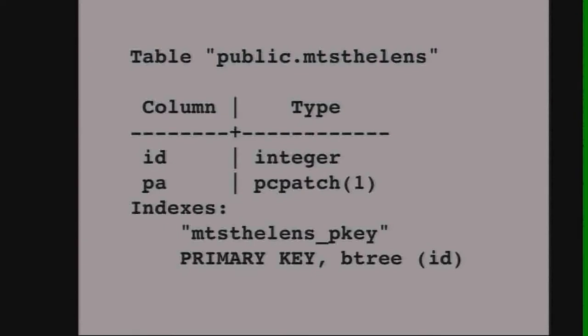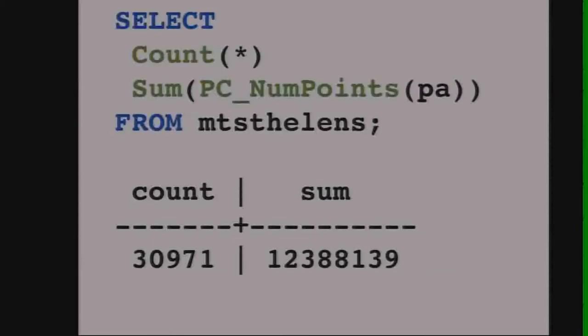When the load is done, we've got a table with a primary key and a bunch of patch data. We can query it out and confirm we've got all 12 million points by summarizing the number of points, and we've got 30,971 patches.